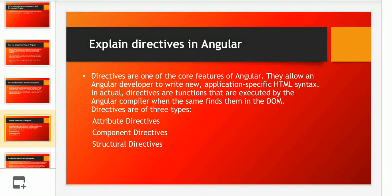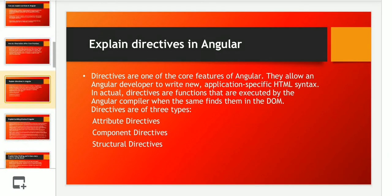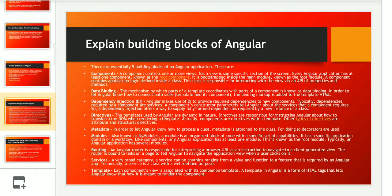The next question was: explain the directives in Angular. There are basically three kinds of directives in Angular: attribute directives, component directives, and structural directives. Directives are one of the core features of Angular. They allow an Angular developer to write new application-specific HTML syntax. Directives are functions that are executed by the Angular compiler when it finds them on the DOM.